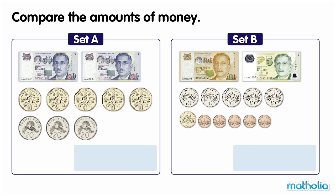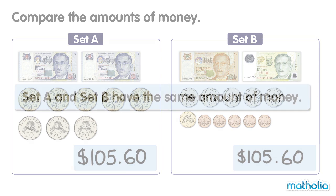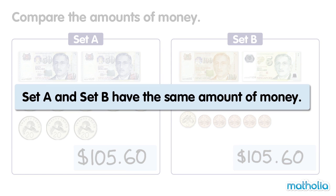Compare the Amounts of Money. In Set A, there is $105.60. In Set B, there is also $105.60. The amounts are the same. Set A and Set B have the same amount of money.